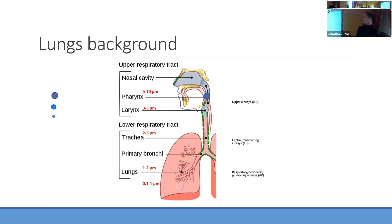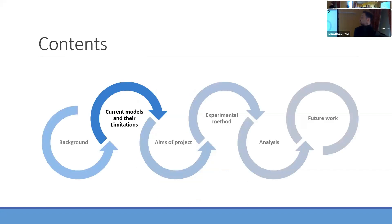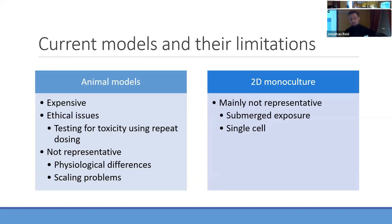Basically, in the smallest terms, the larger the particle, the higher up the respiratory tract it gets stopped and deposits. But what I'm going to be focusing on is the alveolar region, and this is mainly governed by Brownian diffusion, and I'm particularly interested in the nanoparticle range of this process.